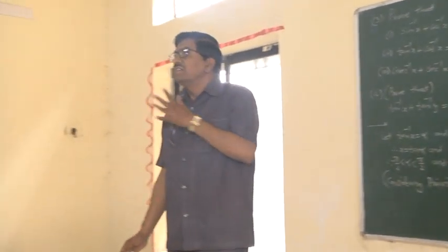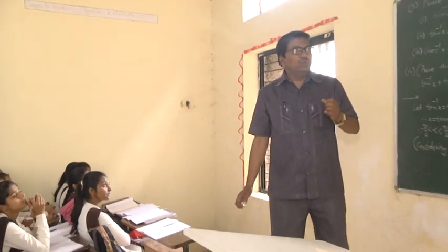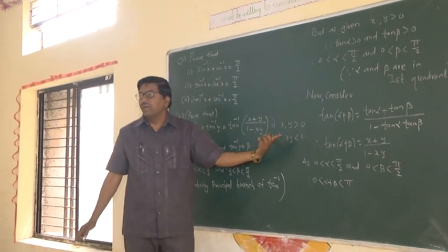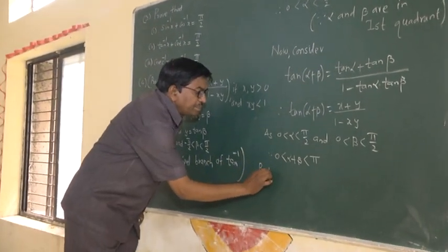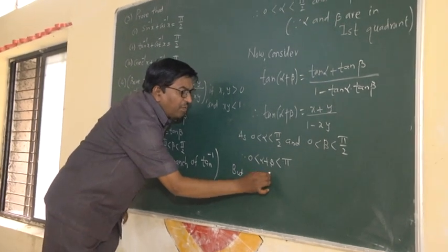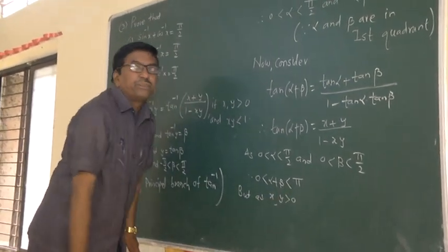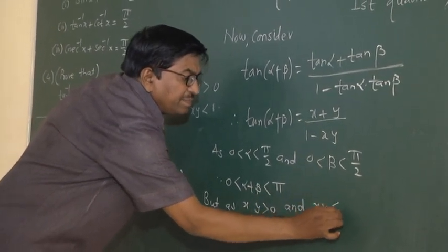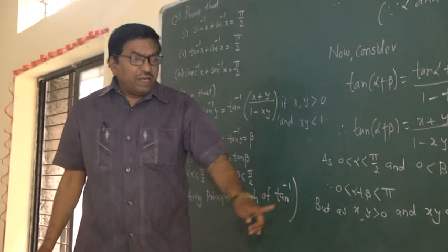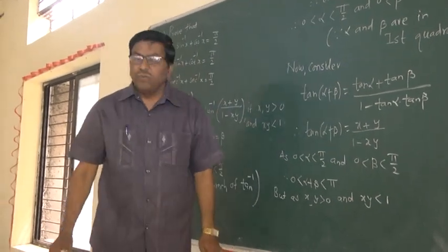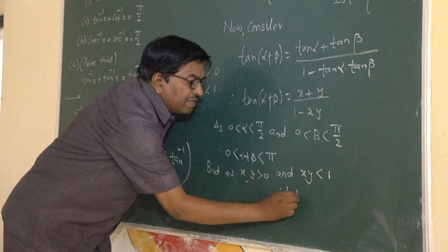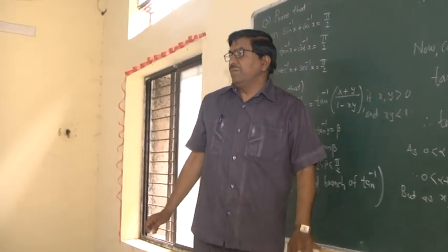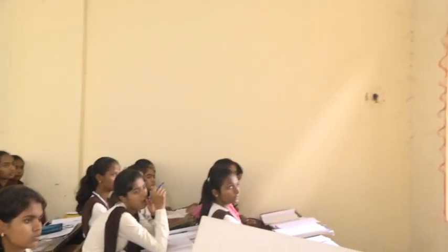Therefore, tan inverse does not directly apply without an additional condition. Our second condition is x times y is less than 1. As x and y are positive and x times y is less than 1, we know that 1 minus x times y is positive.